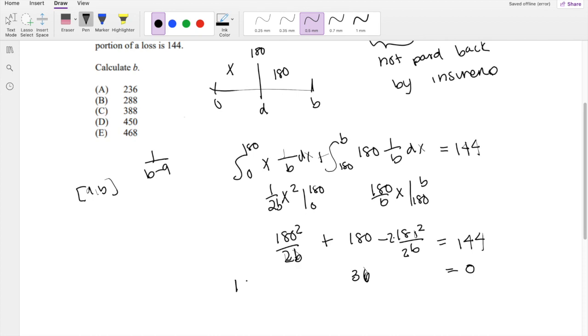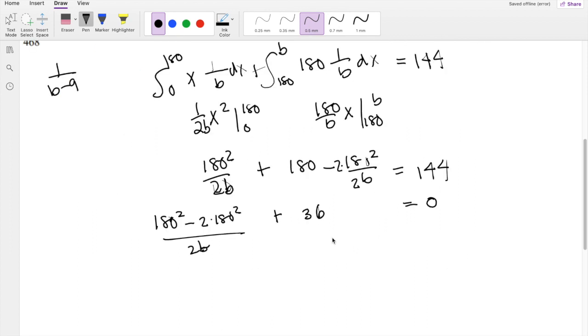So this is technically 180 squared minus 2 times 180 squared over 2B. So I can send the 36 back over to the other side. Negative 36 times 2B, that's negative 72B,